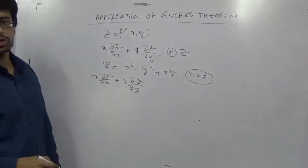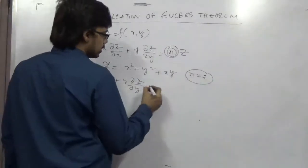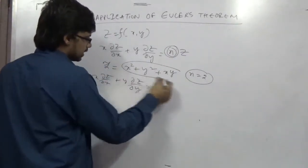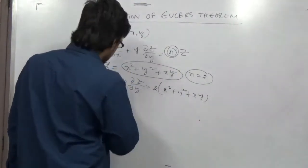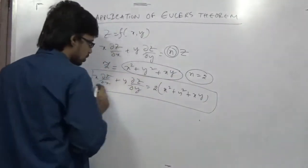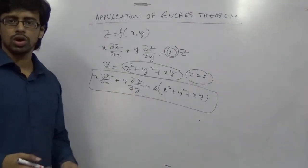Okay, so x times del z del x plus y times del z del y equals n. So n equals 2 here and z is this entire value. So directly utilizing this you can write this as the RHS of this format. This is the beauty of Euler's theorem.